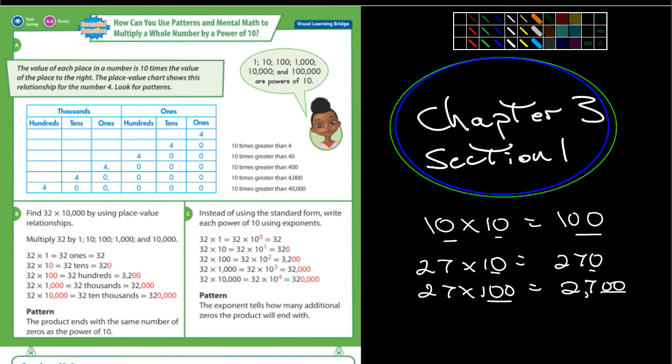Now, what they're showing here, it says the value of each place number is 10 times the value of the place to the right. And this chart shows the relationship for the number four. Here's four ones, and then in the tens place, 40 is 10 times that. In the hundreds place, 400 is 10 times 40. And then when we get to the thousands place, 4,000 is 10 times 400. And 40,000 is 10 times 4,000. And then finally, 400,000 is 10 times that.